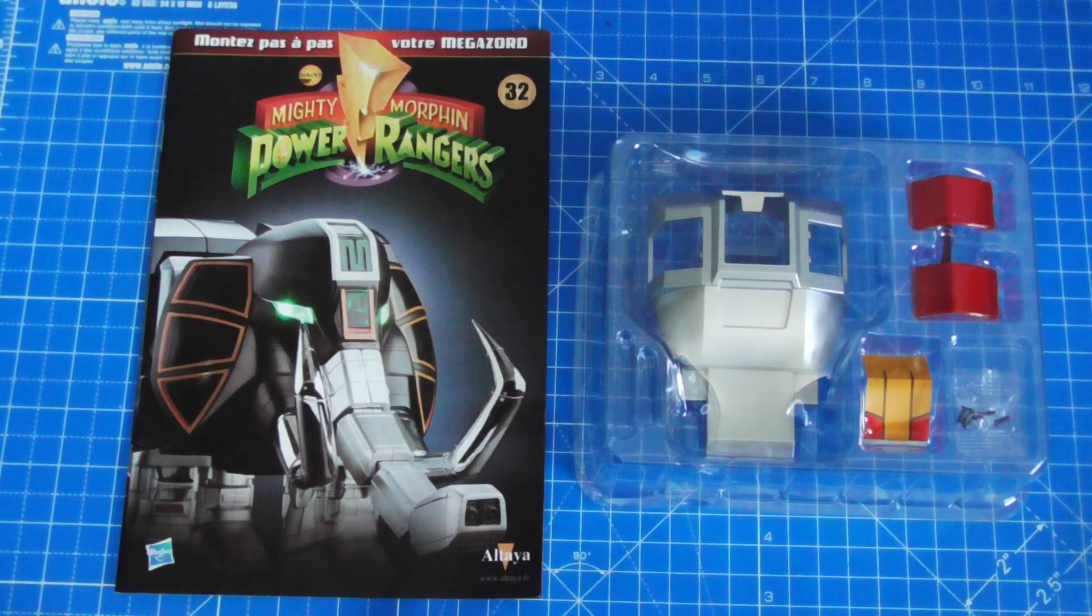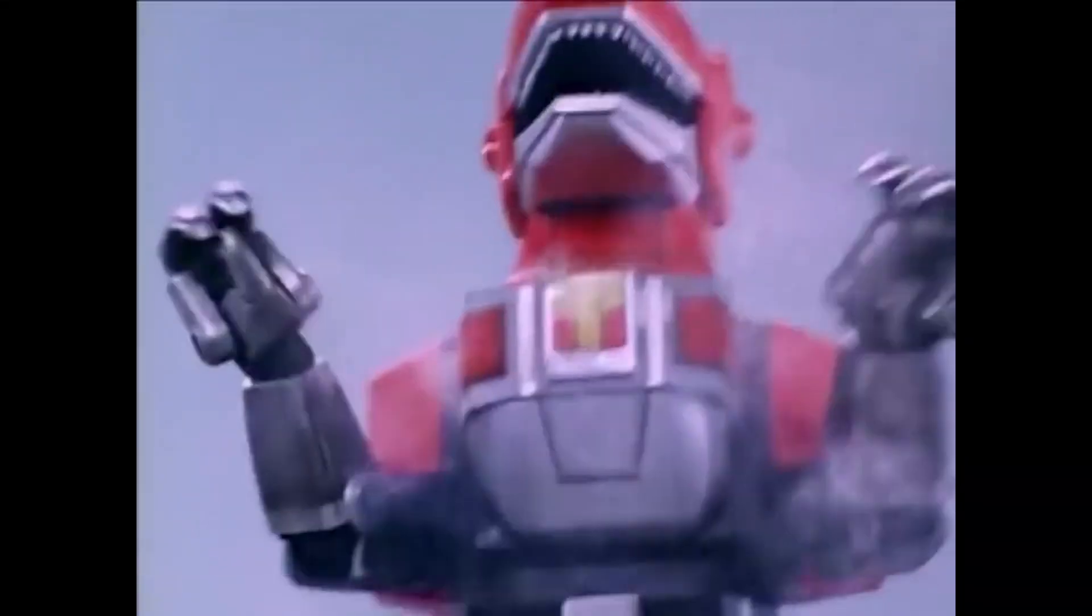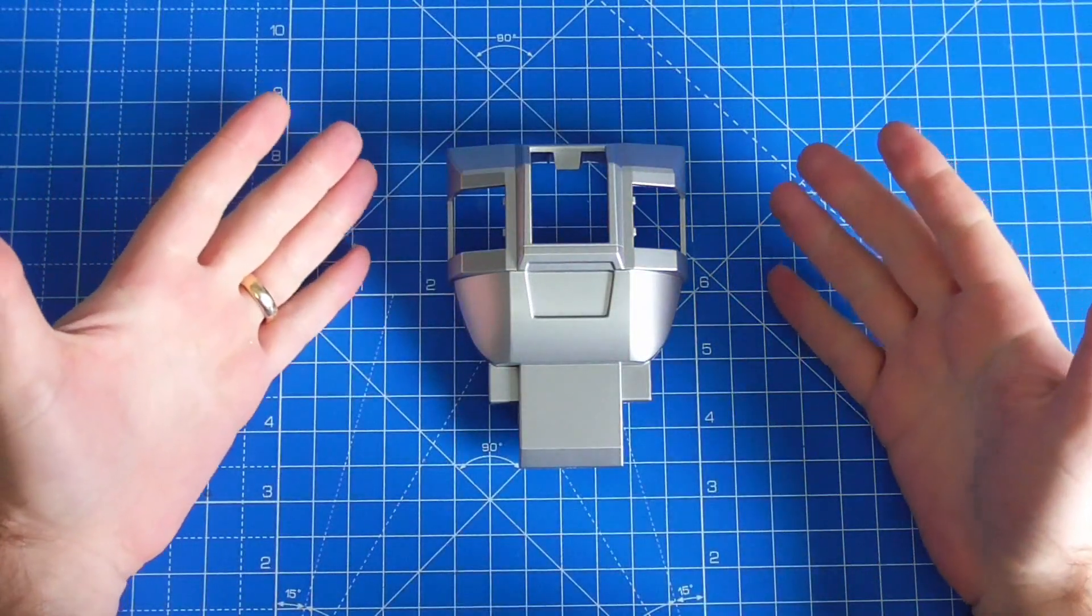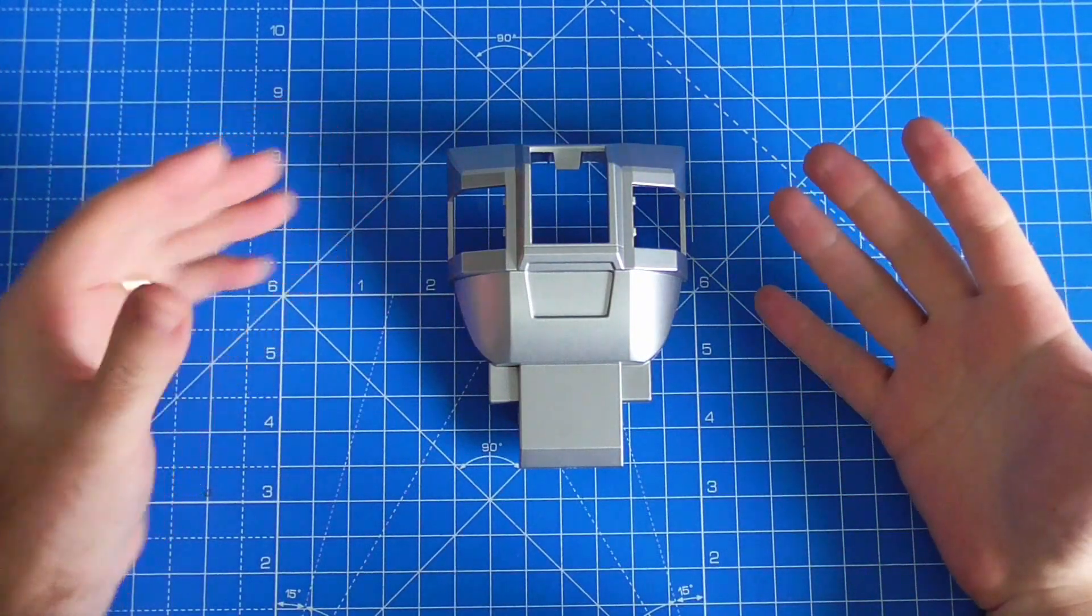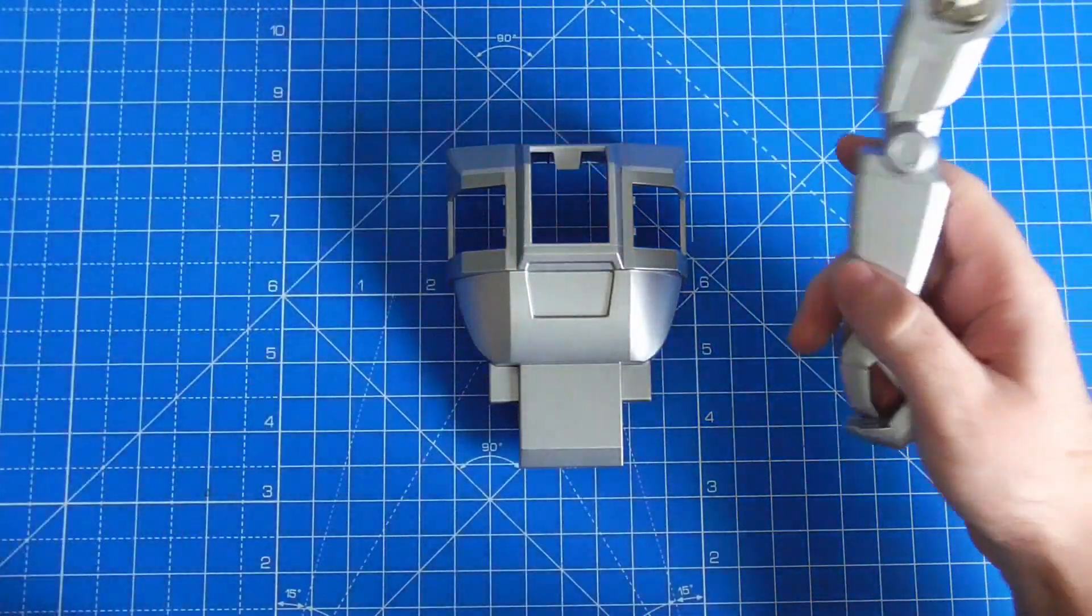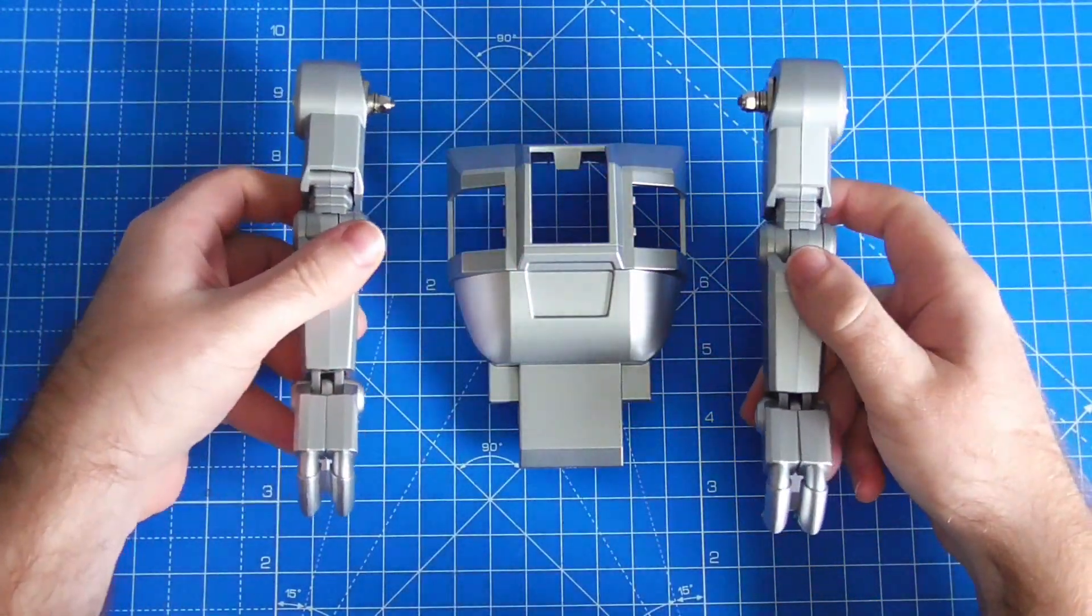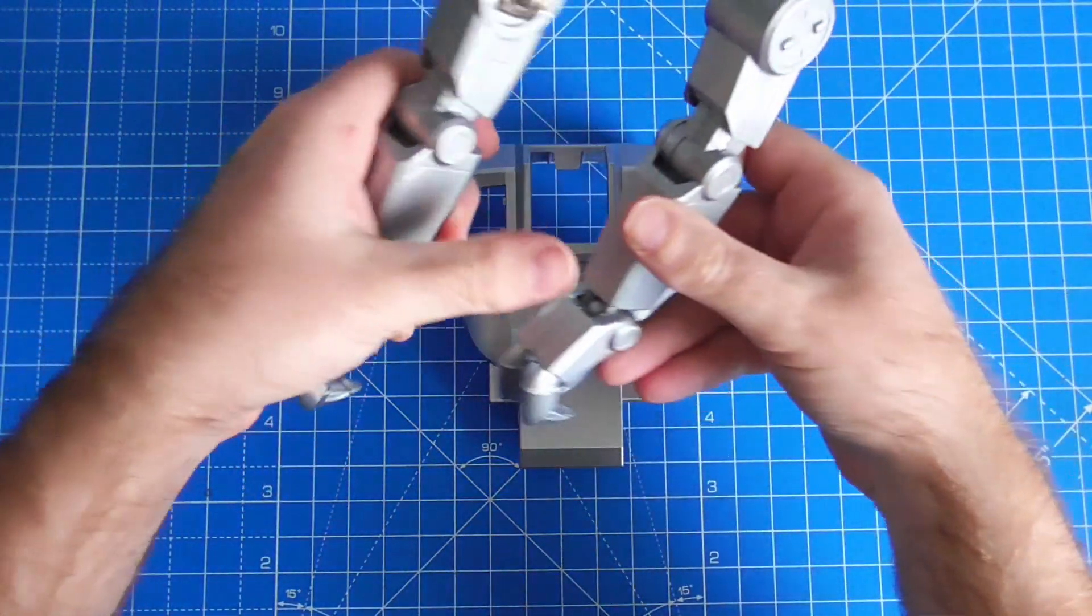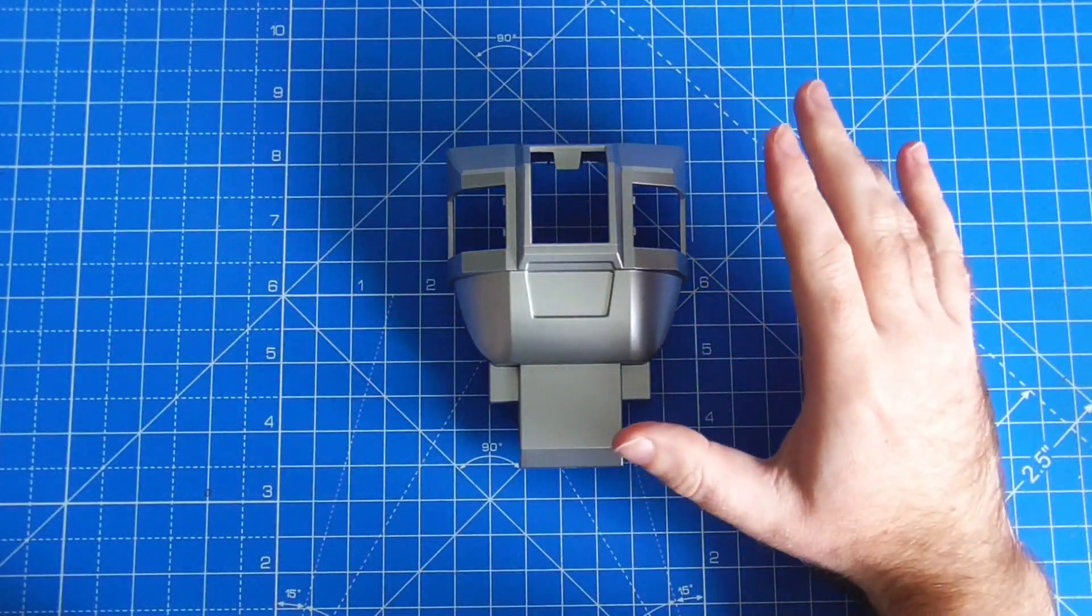But for now, like I say, we're looking at issue 32 where we're continuing with the fantastic Tyrannosaurus sword, Red Ranger sword, of course. We start with this piece here. If you did miss the live stream, you would have seen that I finished both of the arms, T-Rex arms, so they are all done and we're now moving on to the chest and body piece of the T-Rex for the next few issues.